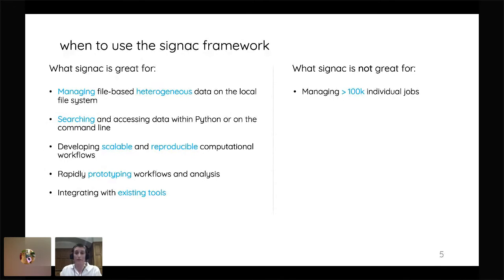And what SIGNAC is not good for is, as I said, with the scalability, once you get over about 100,000 individual jobs, so that's individual directories in that workspace directory, that's when we start to sort of see poorer performance. So this is not for enormous data sets. This is meant for developing things very quickly and being very agile. It's also not great for existing databases. So if you have a lot of distributed data, this is not for you. And if you have purely tabular data, it's going to be overkill.